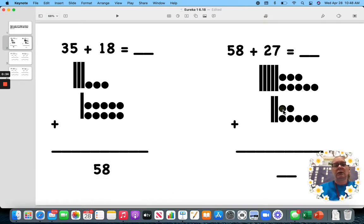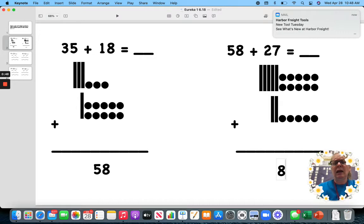Here, I'm going to take these two and move them up here and make a 10. So now I have 1, 2, 3, 4, 5, 6, 7, 8 tens, 80. And 5 ones is 85.